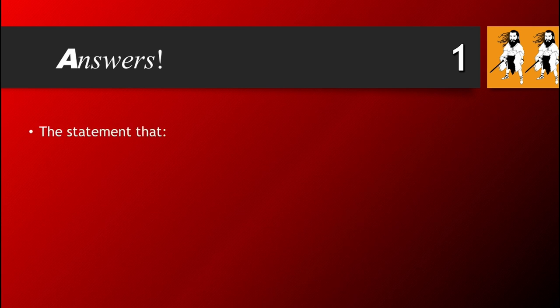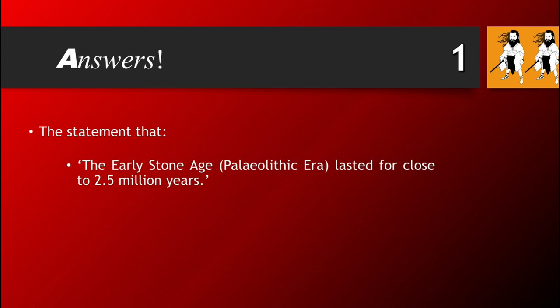Let's go over the answers to the questions we just looked at. Question 1: The statement that the early Stone Age, the Paleolithic Era, lasted for close to 2.5 million years — it's true. Well done if you put that below.